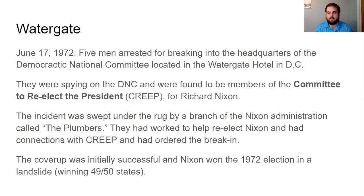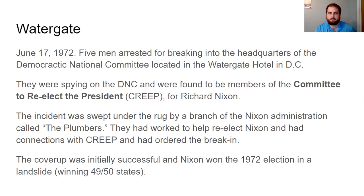But Richard Nixon had some skeletons in his closet. When it was time for his re-election in 1972, on June 17th, 1972, during the middle of the presidential campaign, there were five men arrested. They were arrested for breaking into the headquarters of the Democratic Party's National Committee, located in the Watergate Hotel in Washington, D.C. They came not to steal, but to spy — spying on the Democratic National Committee to help the Republican Party win. They were found to be members of something called the Committee to Re-Elect the President, or CREEP, which is a terrible acronym.